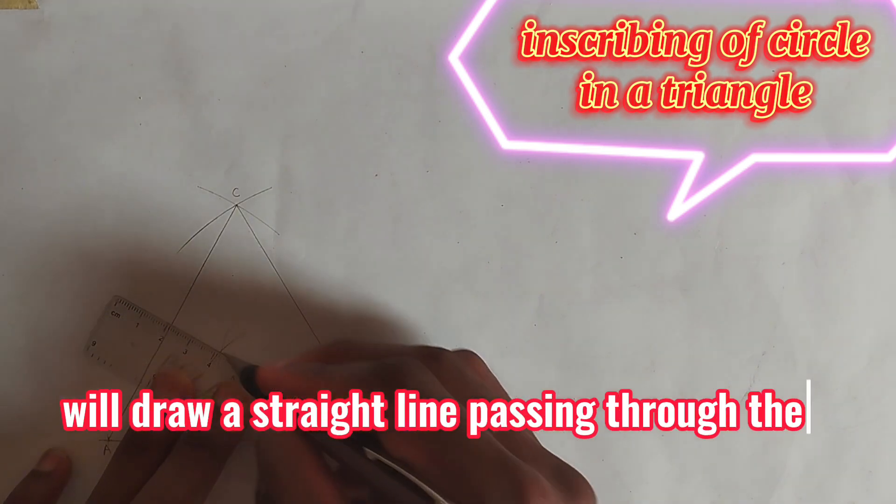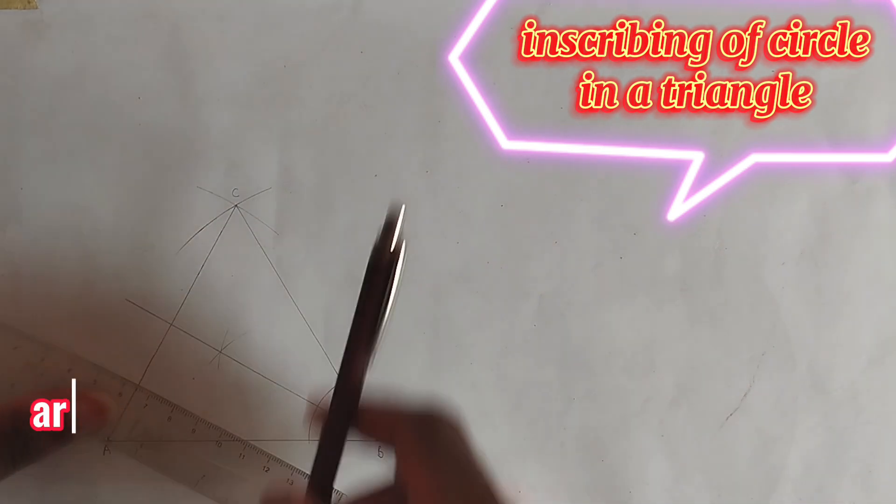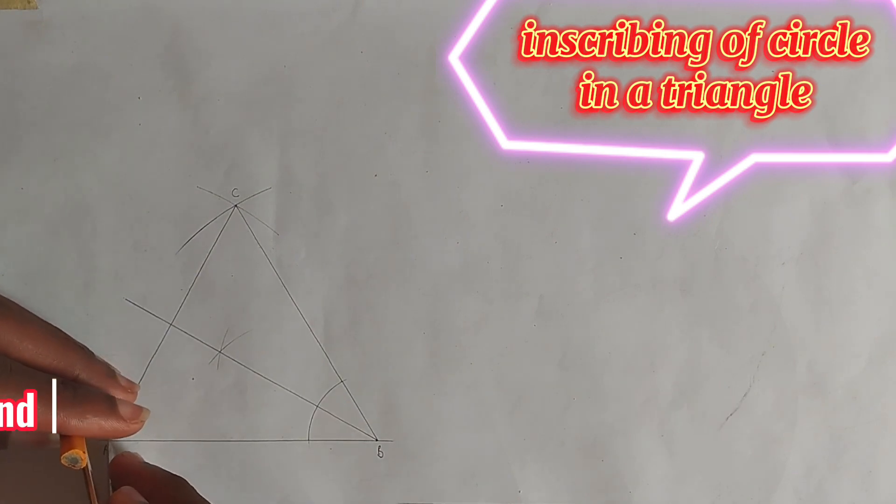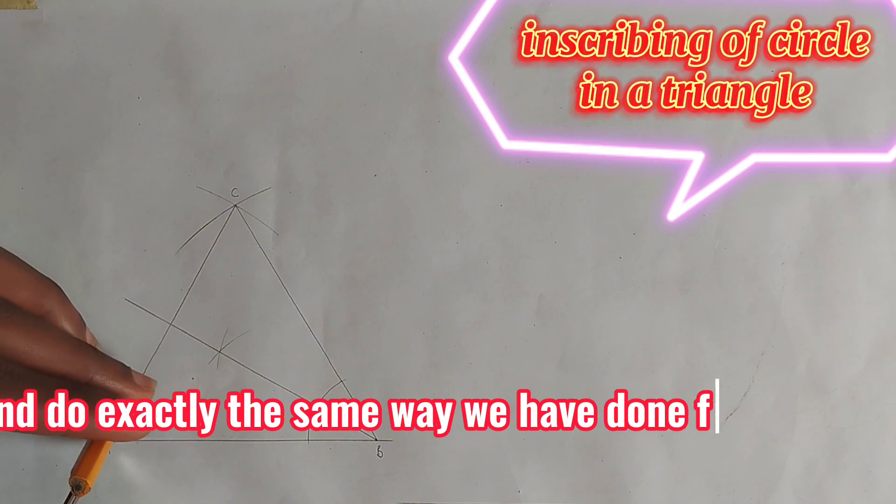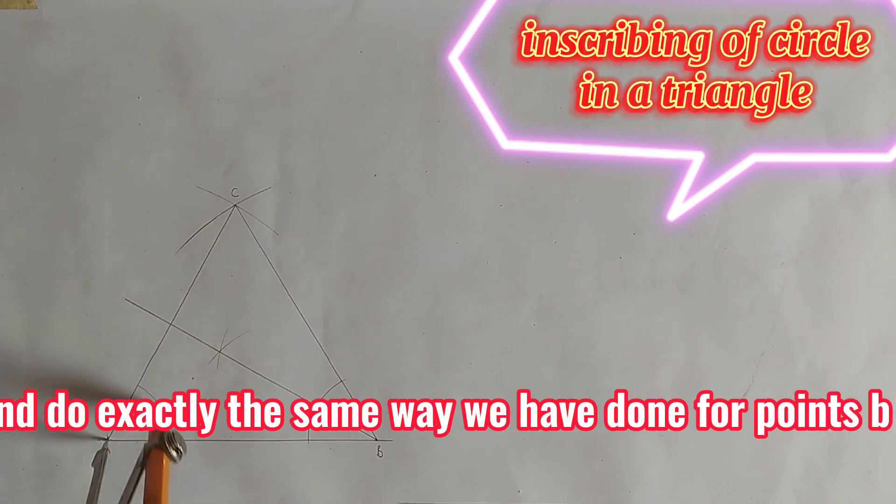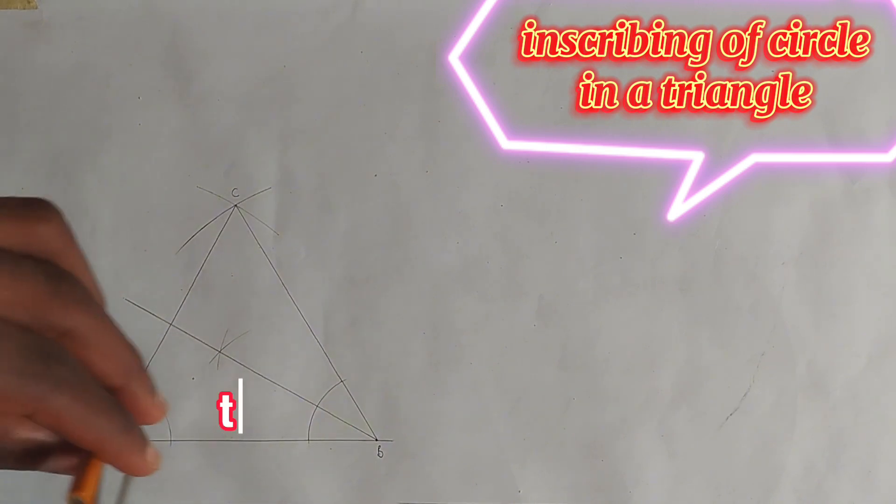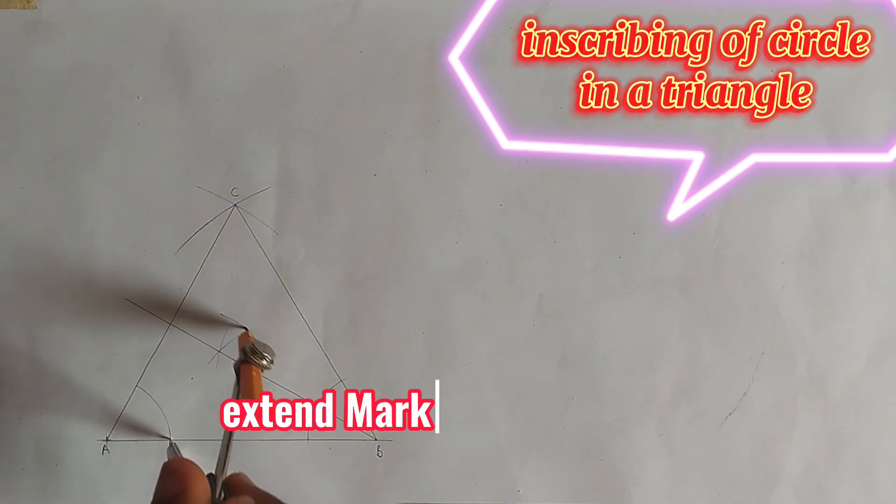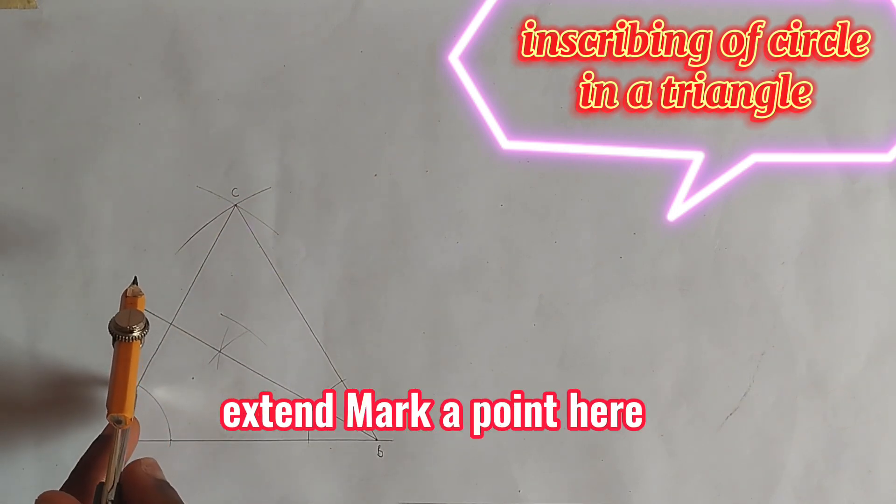We also place it on point A and do exactly the same way we have done for point B. We will draw an arc, then place it at this point, extend, mark a point here, and place it here also.